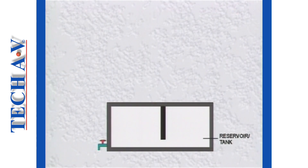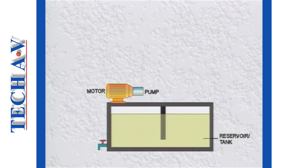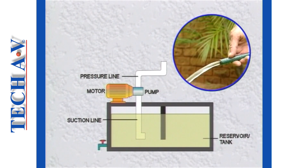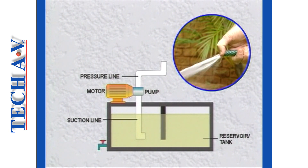A power pack usually comprises a reservoir or tank that contains the oil for the system, and the hydraulic pump and its drive motor. The purpose of a pump is to provide the required flow of oil within a system. Oil is drawn to the pump from the tank through a suction line; the pump then discharges the oil through its outlet into the pressure line. As we learned earlier, flow on its own does not result in pressure until that flow meets a restriction.